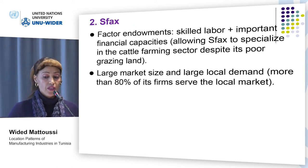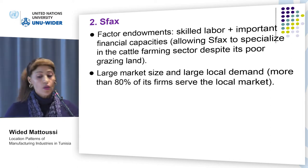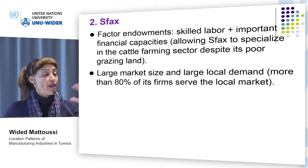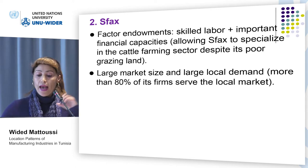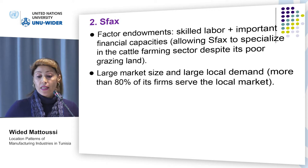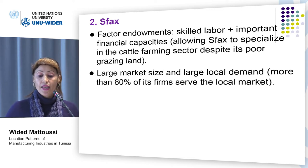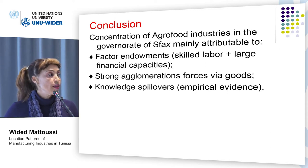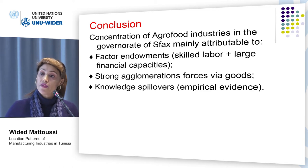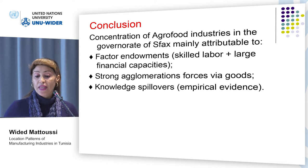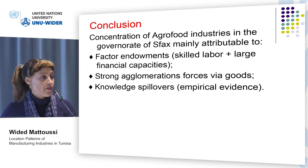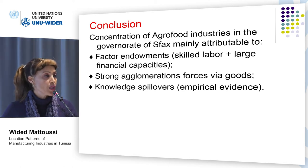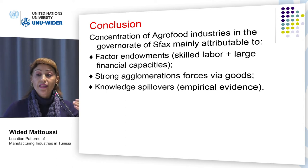As for the governorate of Sfax, concentration of agro-food firms there is attributable more to factor endowments and to strong agglomeration forces operating via goods than to natural cost advantages. Sfax is characterized by its large market size and large local demand — indeed more than 80% of its agro-food firms serve the local market. As for its factor endowments, in addition to its skilled labor pool, Sfax is characterized by its important financial capacities allowing its investors to exploit economic policies which provide subsidies to encourage the cattle farming sector despite its poor grazing land.